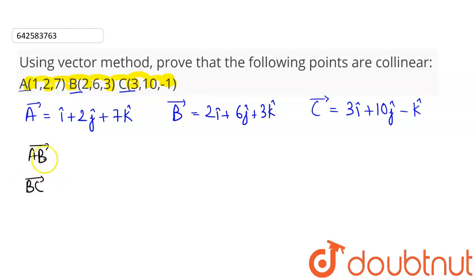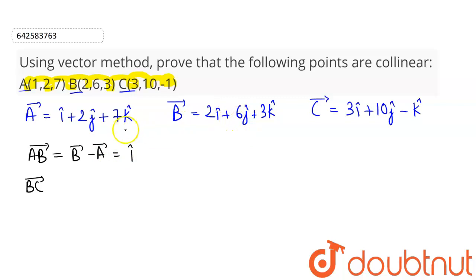Now we will be determining AB vector and BC vector, and we will be checking whether these two vectors are parallel or not. AB vector is equal to position vector B minus position vector A. So 2 i cap minus i cap gives i cap, 6 j cap minus 2 j cap gives plus 4 j cap, and 3 k cap minus 7 k cap gives minus 4 k cap.